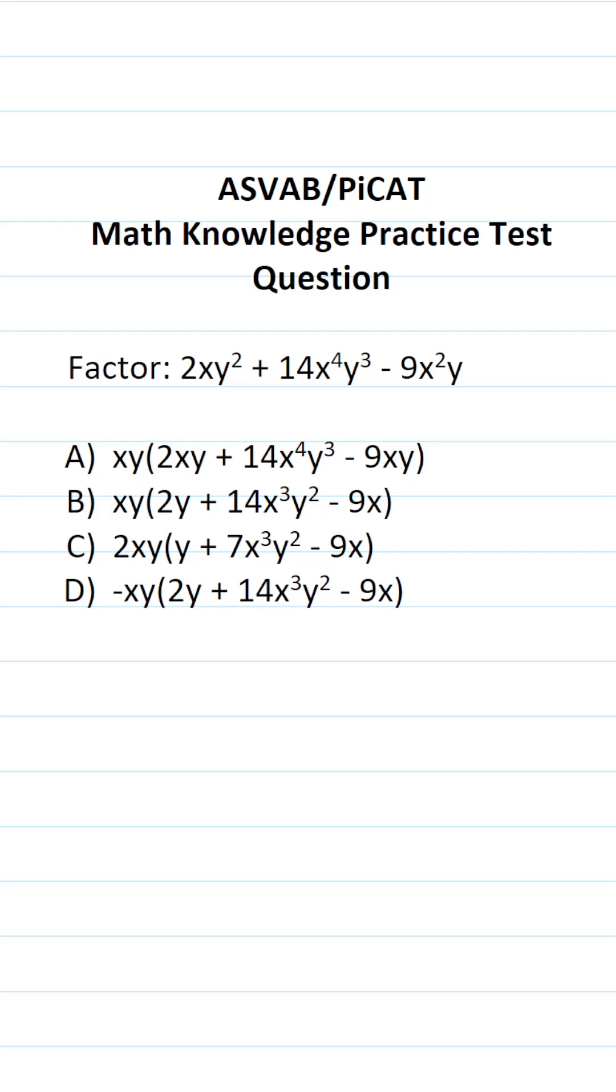This math knowledge practice test question for the ASVAB and PiCAT says factor 2xy squared plus 14x to the fourth y to the third minus 9x squared y.